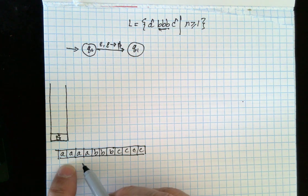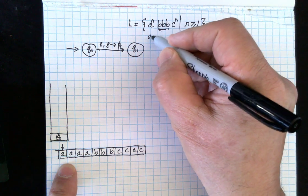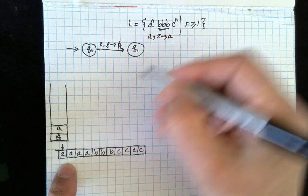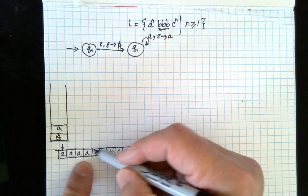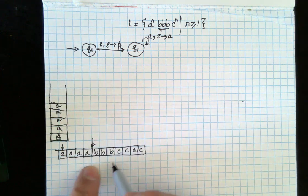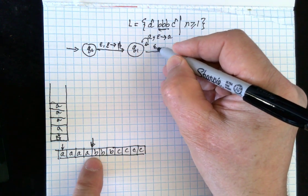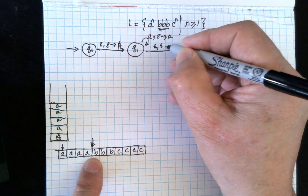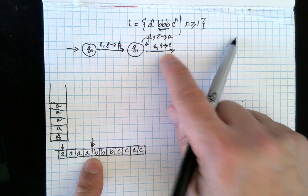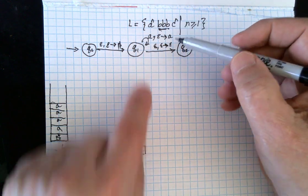In Q1, we read from the input tape. When we read an A, we pop nothing from the stack and push an A. We do this repeatedly for each A — so for four A's we push four A's onto the stack. Then we transition to Q2 via an epsilon transition, not reading the tape, not popping or pushing anything — like a finite automaton transition.